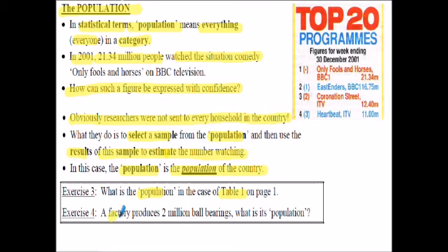A factory produces two million ball bearings - what would the population be? Looking back at table one, you'll see that the population, the total number of people employed at the engineering company, was 800. The population of ball bearings we're talking about would be two million if that was the total number produced.